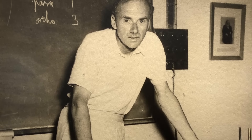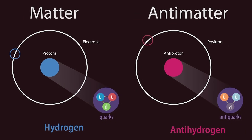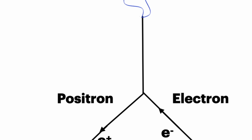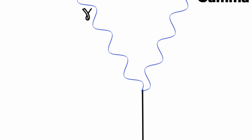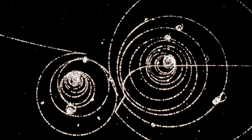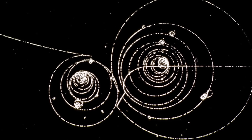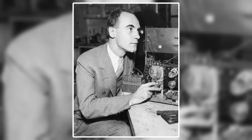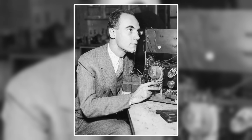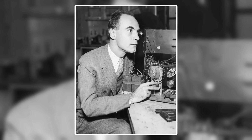Dirac insisted that instead of the equation having a mistake, there existed, for every type of subatomic particle, an oppositely charged antiparticle to pair with it. These pairs, upon collision, would annihilate with one another and release a tremendous amount of energy. The concept of antimatter sprung into theoretical possibility with Dirac's equation, and the search to find antimatter experimentally was on. Four years later, an American physicist by the name of Carl David Anderson would be the first to do so, discovering the positron, the antimatter equivalent of the electron.